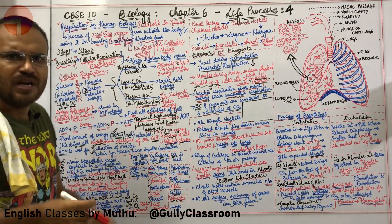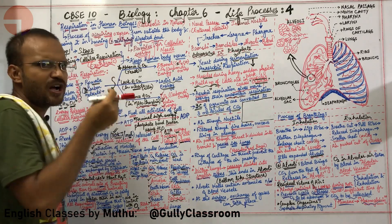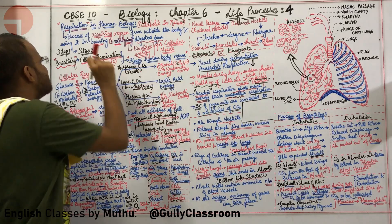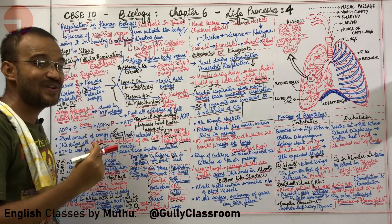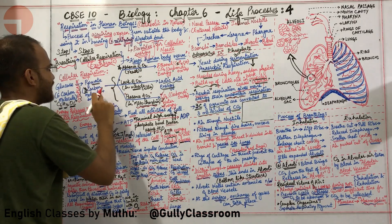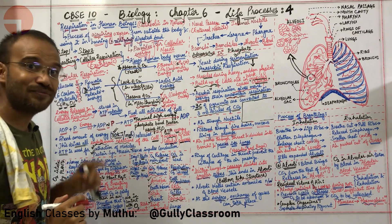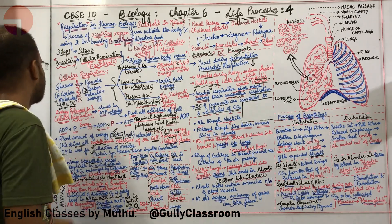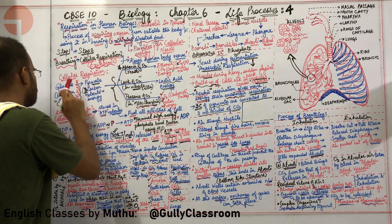This process of combining oxygen and glucose to produce energy happens in each and every cell, hence it is called cellular respiration. Cellular respiration can take three different kinds of pathways.